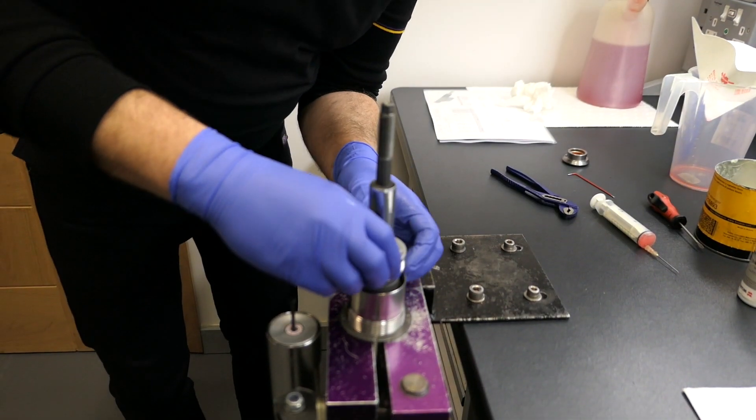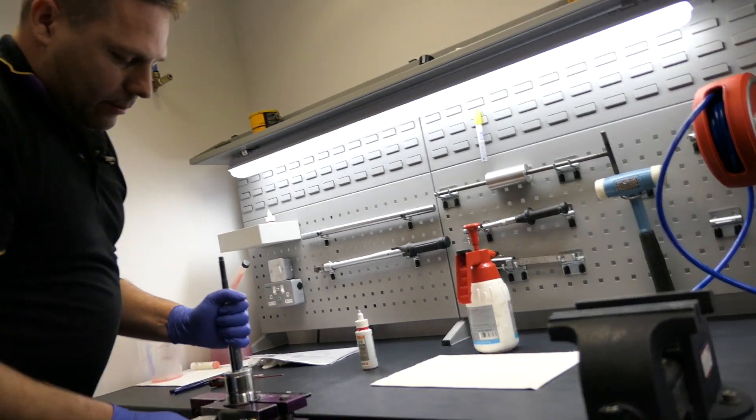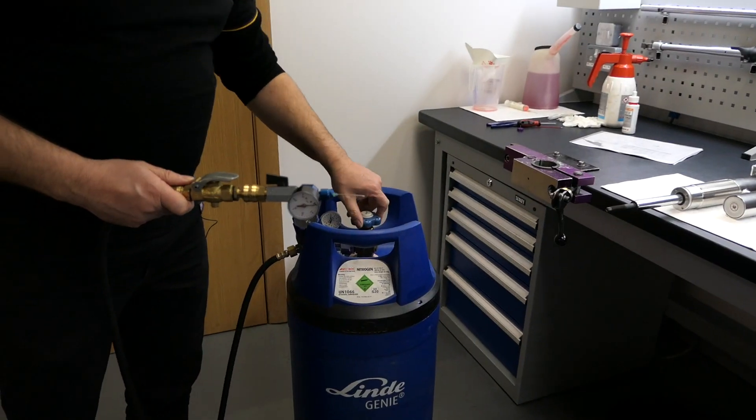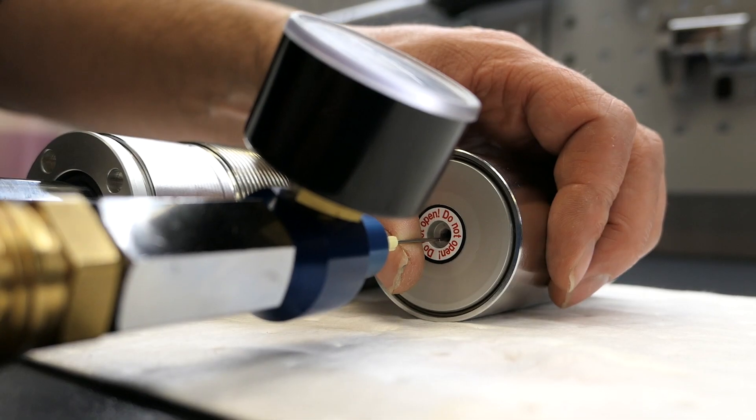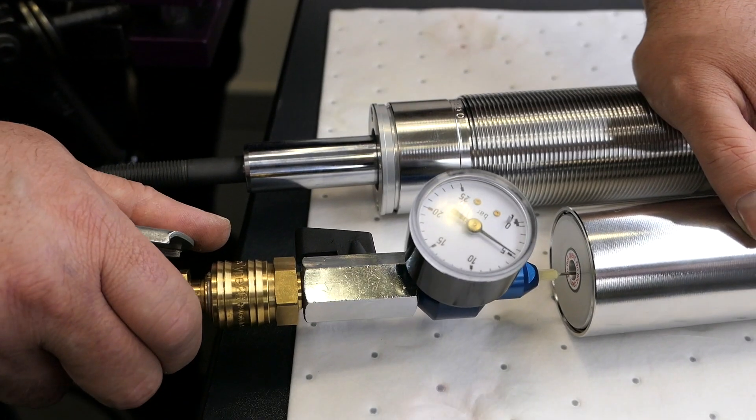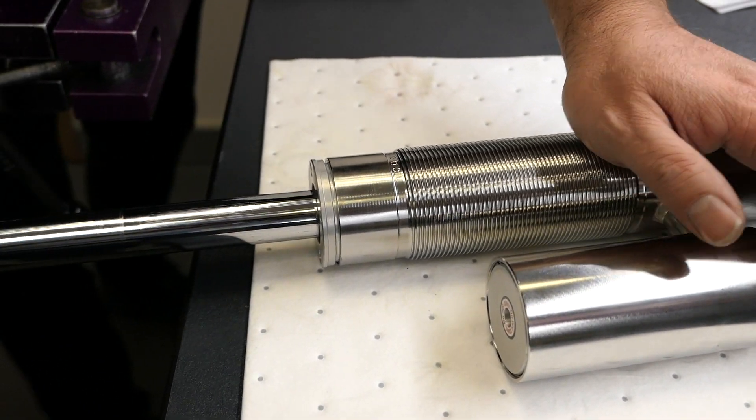With the damper assembled, it's closed and torqued to 130 newton meters. Okay, so that's now built. The next bit is quite technical. We're going to now fill the bladder with nitrogen. The bladder is charged to five bar before the damper can be tuned to KW's factory specified settings, which are unique to each specific model of 911.